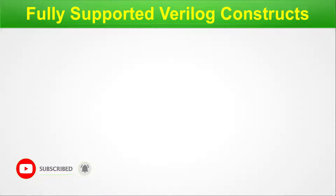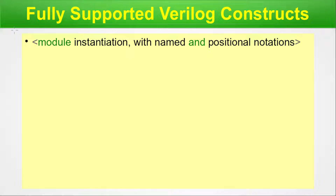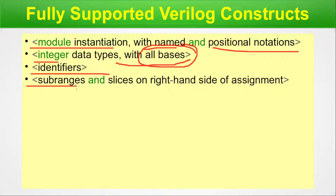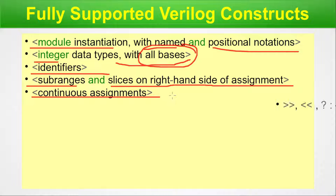Fully supported Verilog constructs include: module instantiation with named and positional notations; integer data types with all bases — decimal, binary, hexadecimal, octal; identifiers; sub-ranges and slices on the right-hand side of an assignment; continuous assignments; and all standard symbols and corresponding operations.